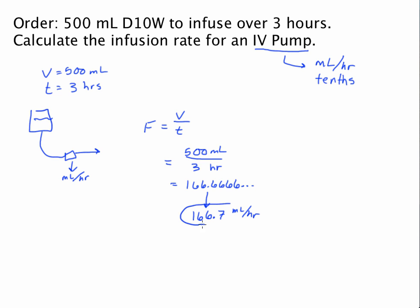This is what we need to set the infusion pump for. That's because we need milliliters per hour, which we have. We need to round at the tenths place.